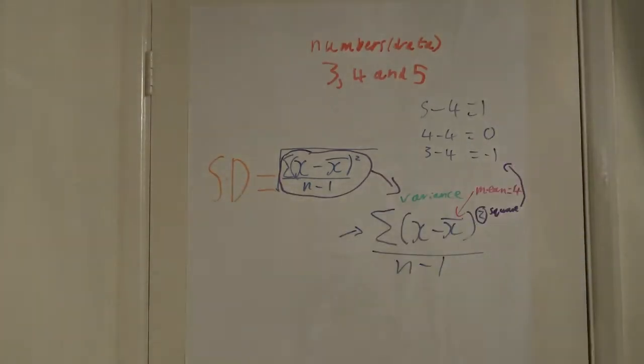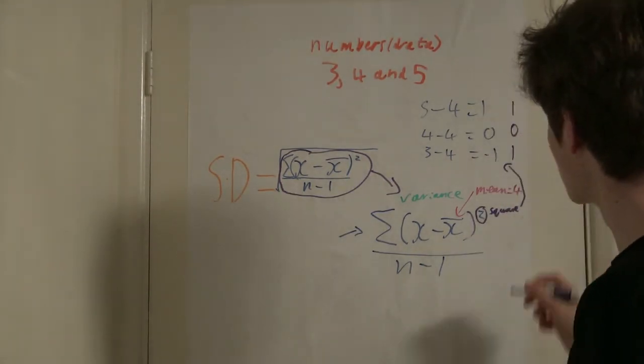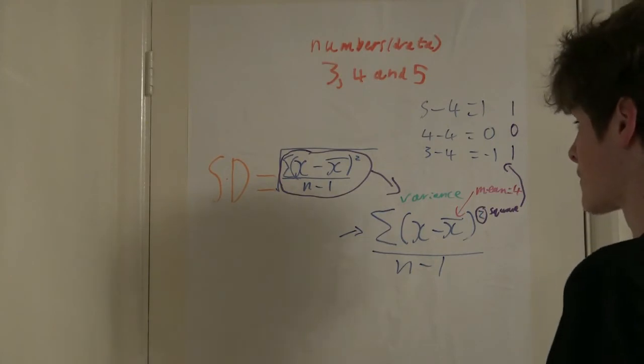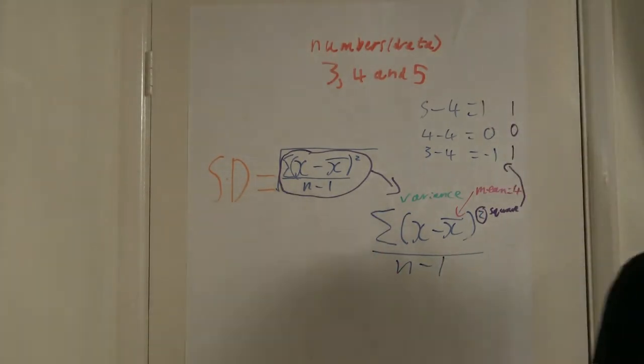Now you square each of these numbers, which is 1 squared which equals 1, 0 squared which equals 0, and minus 1 squared which equals 1.